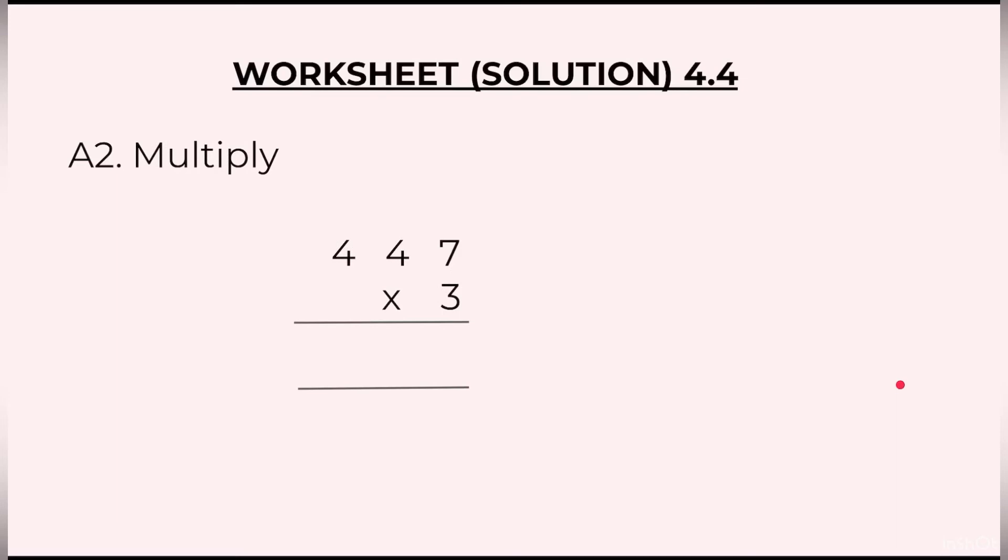Question 2 was 447 × 3. We will start by multiplying 3 by 7. That is 21, 2 at the top, 1 at the bottom. 3 into 4, 12 plus 2, 14. 1 at the top, 4 at the bottom. 3 into 4, 12 plus 1, 13. So the final answer is 1341.